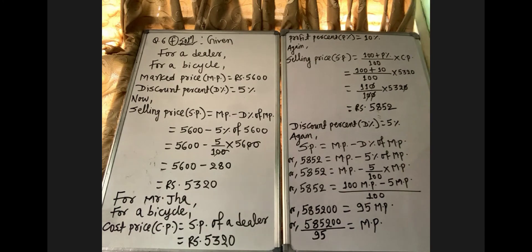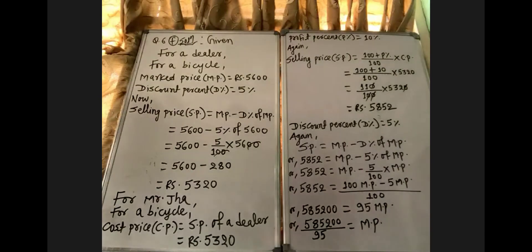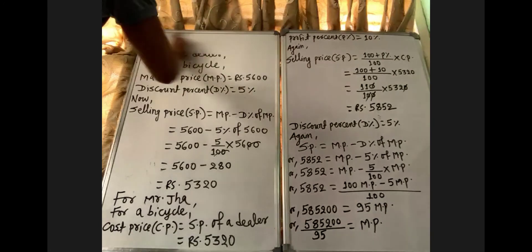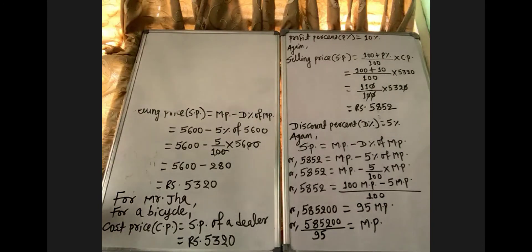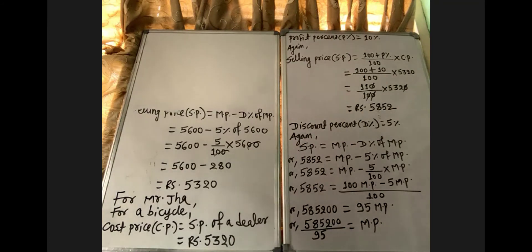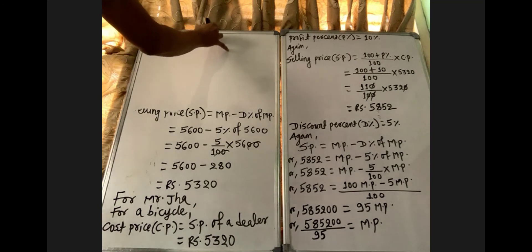Now we divide: MP = 585200 / 95. Solving this gives MP = 6160. Therefore mark price (MP) equals Rs 6160.